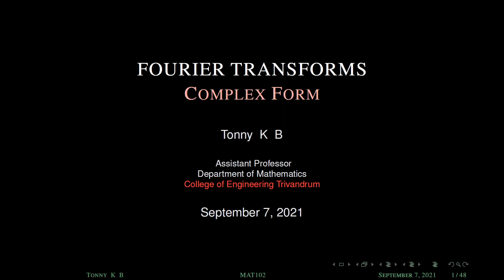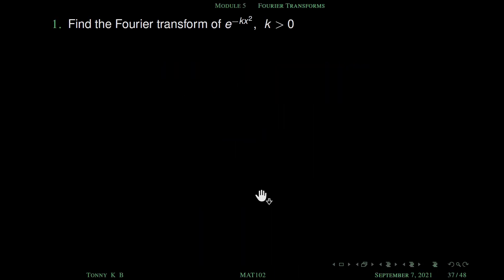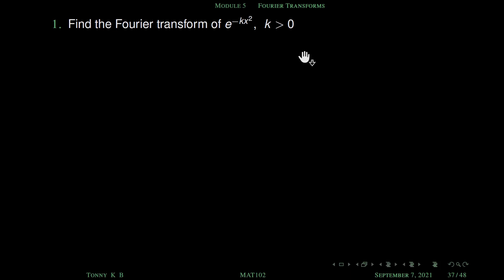In this session we will discuss a special problem of Fourier transform. We need to find the Fourier transform of e raised to minus kx square, where k is positive. To solve this problem we will use some special techniques.